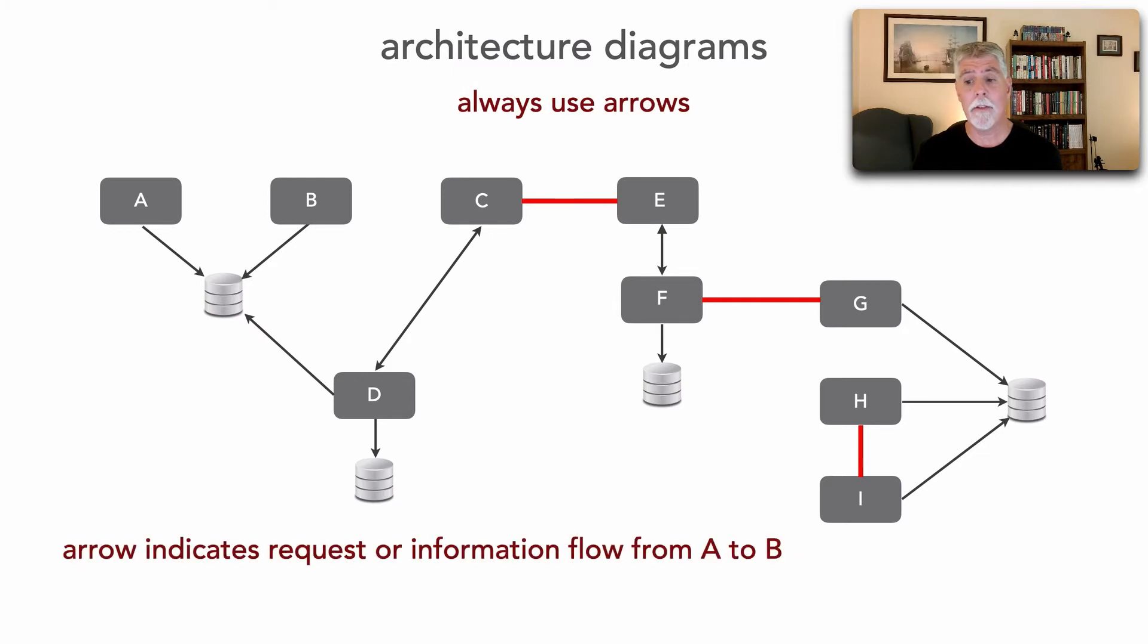But in fact, it is from G over to F. And then of course H goes to I. Now I've got more information. And so the key point is try to avoid the use of lines without arrows.